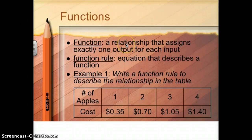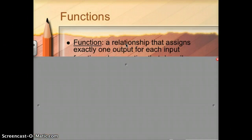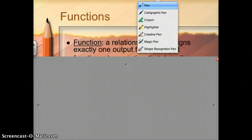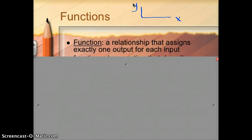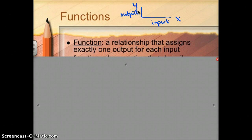Functions should be a new vocab word for you. The technical definition of a function: it's a relationship that assigns exactly one output for each input. When we're talking about outputs and inputs, we usually look at a function table or a relationship. Your inputs are what's going on the x-axis, and your output is going on the y-axis. So a function is a relationship that assigns exactly one output for each input.